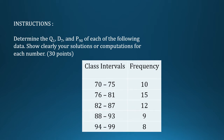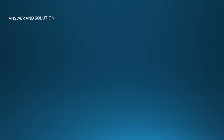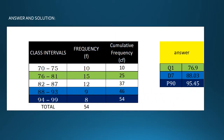The class intervals and frequencies are: 70–75 with frequency 10, 76–81 with frequency 15, 82–87 with frequency 12, 88–93 with frequency 9, and 94–99 with frequency 8. Now, we need to solve first the cumulative frequency.